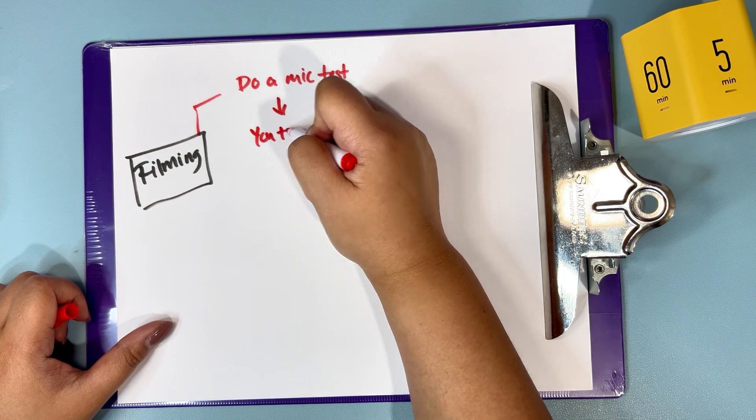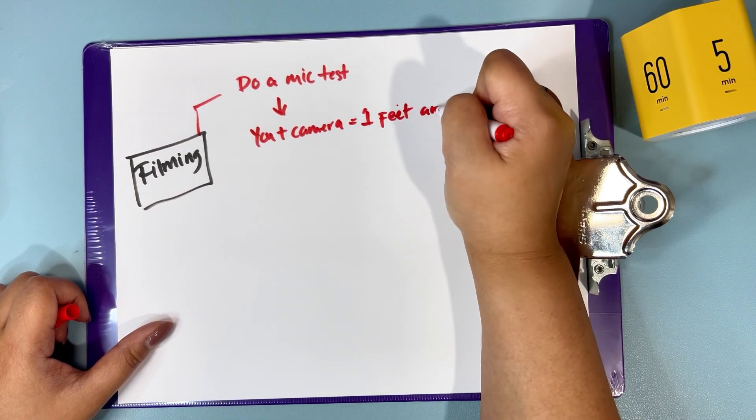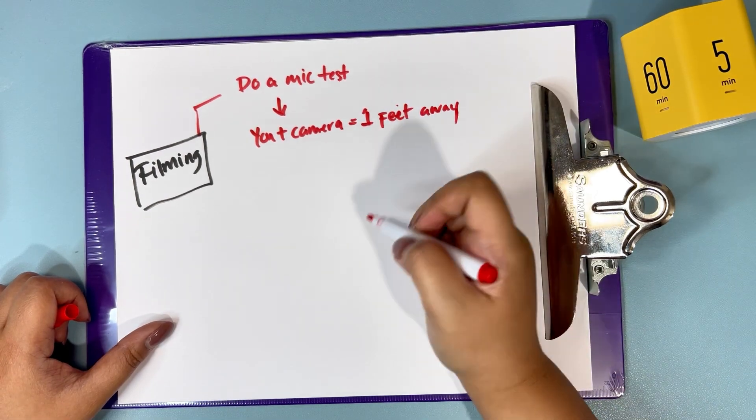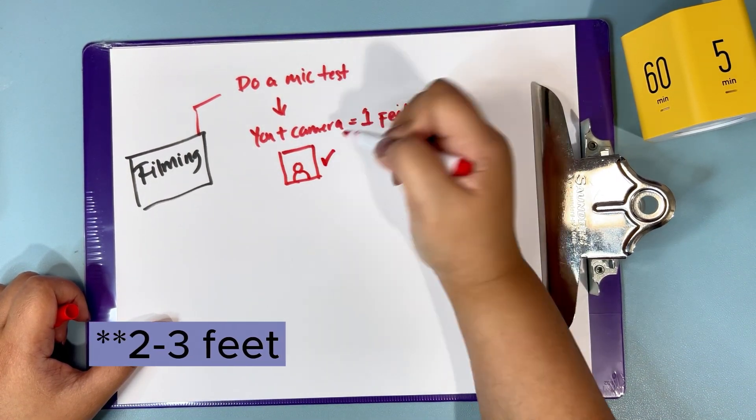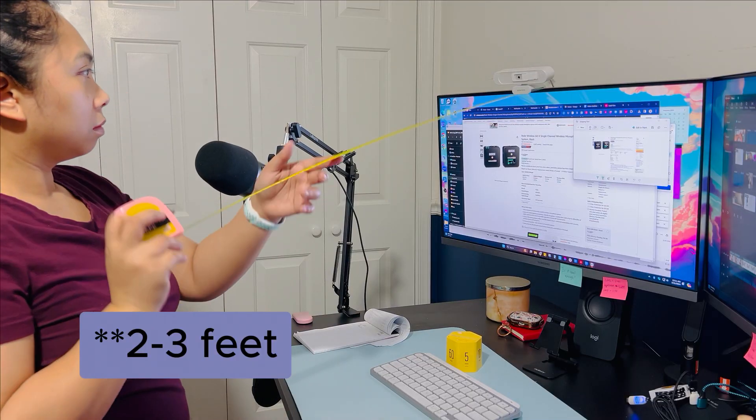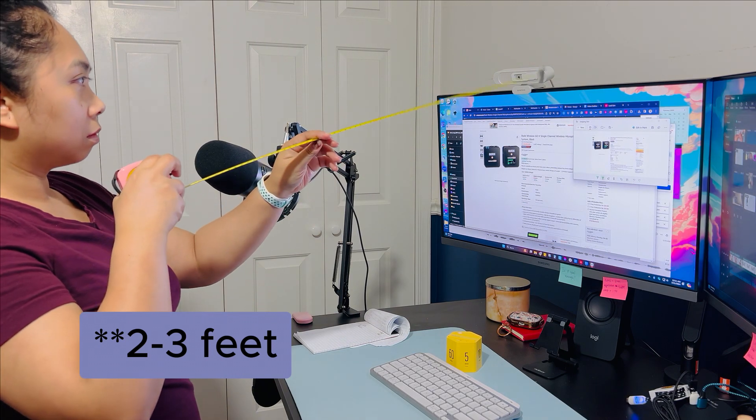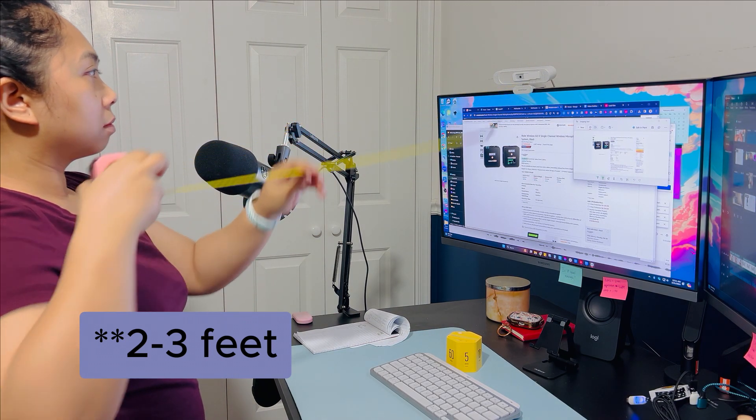When you're ready to film, do a mic test to avoid audio issues later. It takes less than a minute and saves you time and headaches. Next, consider the distance between you and the camera. If you plan to repurpose the video for Instagram or YouTube shorts, stand or sit about a foot away from the camera. This way, when you change your video from horizontal to vertical, it won't look weird.